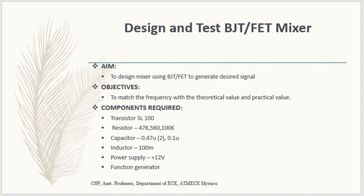The components required for designing and testing the BJT or FET mixer are: a BJT transistor SL100 (one quantity), resistors of 47 kilo-ohm, 560 ohm, and 100 kilo-ohm, capacitors of 0.49 microfarad (two quantities) and 0.1 microfarad (one quantity), an inductor of value 100 milli-Henry, a 12-volt power supply, and two function generators.